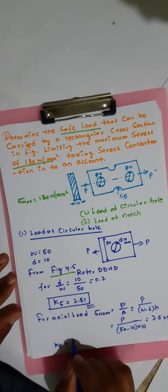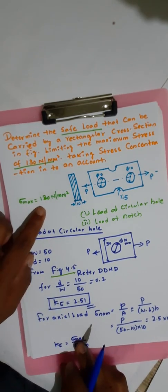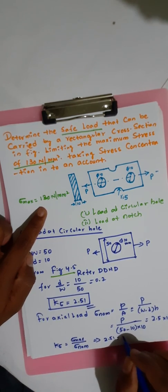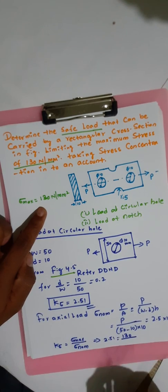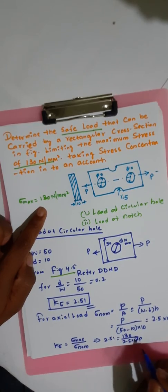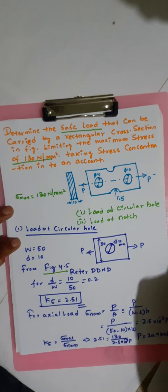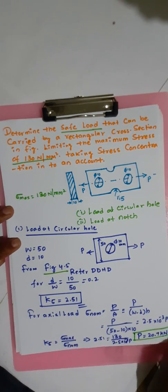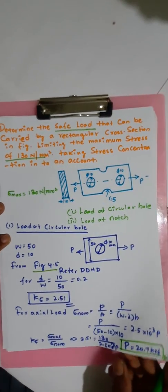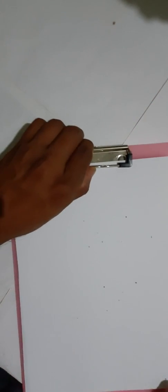Using the stress concentration formula: K_sigma = sigma_max / sigma_nominal. We have K_sigma = 2.51, sigma_max = 130 N/mm², and sigma_nominal = 2.5 × 10⁻³ × P. Solving: P = 130 / (2.51 × 2.5 × 10⁻³) = 20.7 kN. This is the load corresponding to the circular hole.